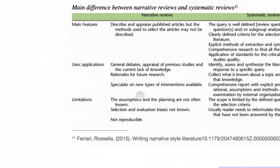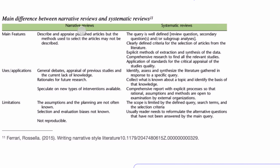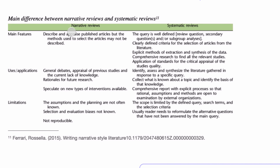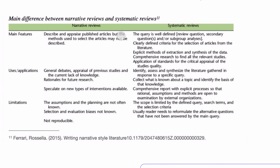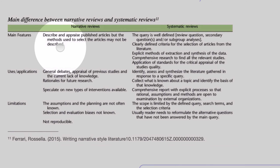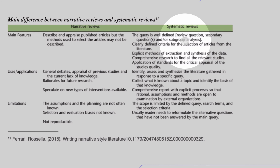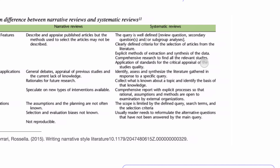Here is a table differentiating systematic review and narrative review. The narrative review describes and appraises published articles, but the method used to select articles may not be clearly described or defined beforehand. In contrast, the systematic review has a well-defined review question, secondary questions, and clearly defined criteria for selection of articles.